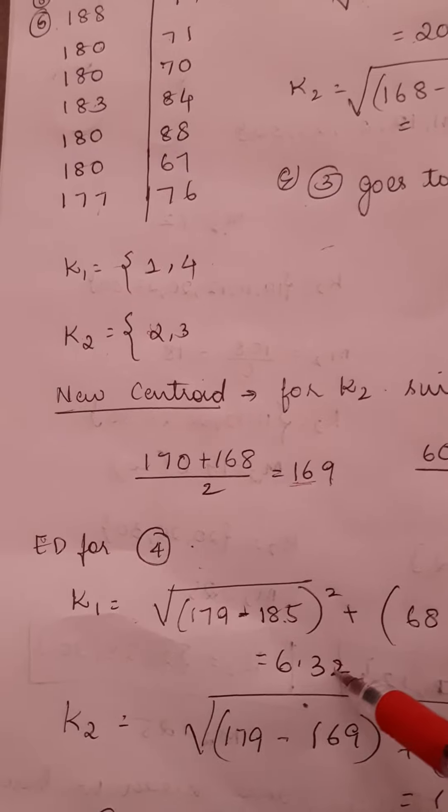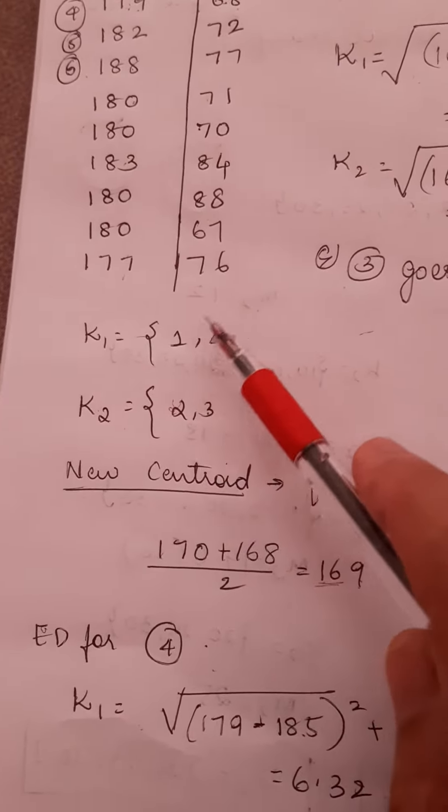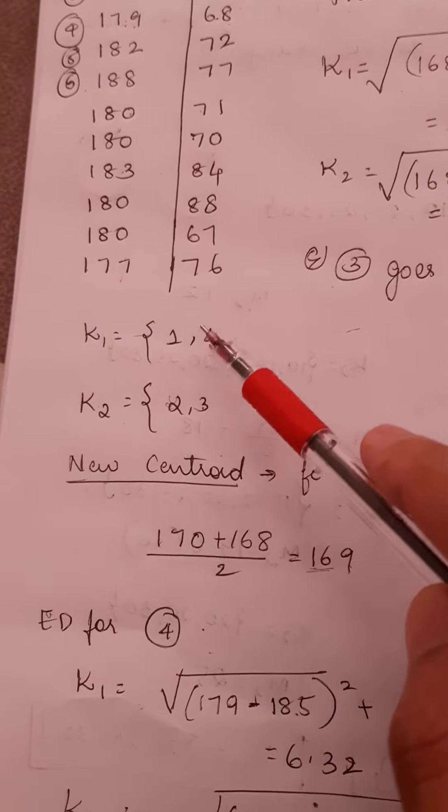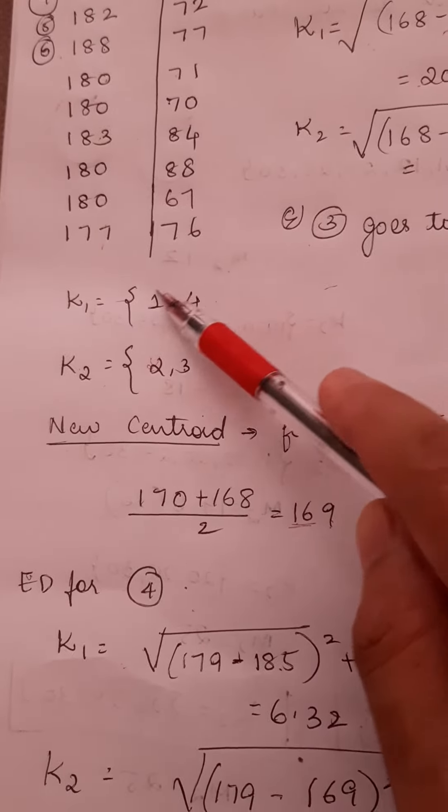Now again, what happens? You have to recompute the centroid for K1 because now you have added a new value—the fourth row is being added to cluster K1. So we have to recompute the centroid for K1 just as we did for K2, and then again compute